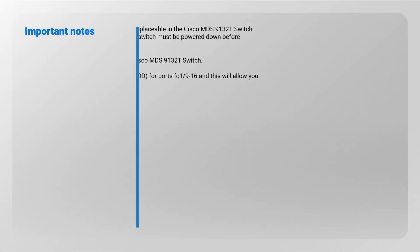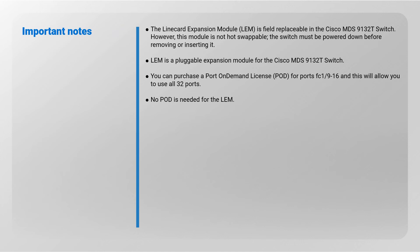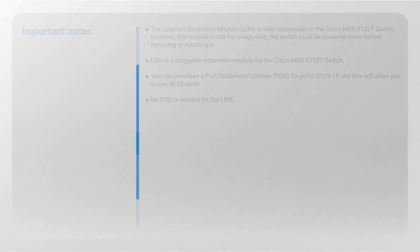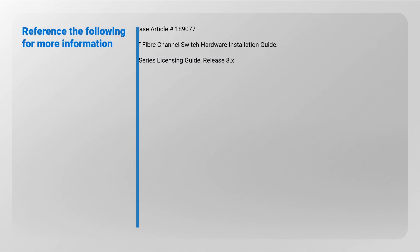Important notes: The line card expansion module is field replaceable in the Cisco MDS 9132T switch; however, this module is not hot-swappable — the switch must be powered down before removing or inserting it. The LEM is a pluggable expansion module for the Cisco MDS 9132T. You can purchase a port-on-demand license for ports FC1/9 to FC1/16, which will allow you to use all 32 ports. No POD license is needed for the LEM.